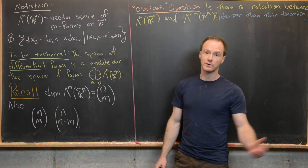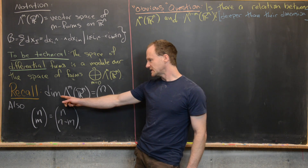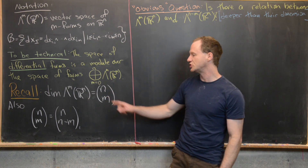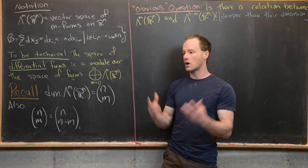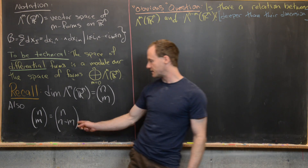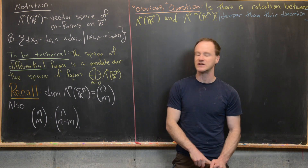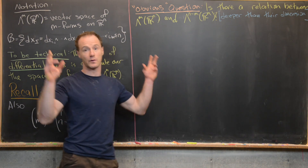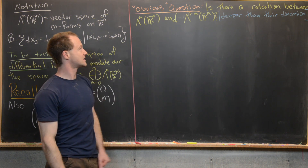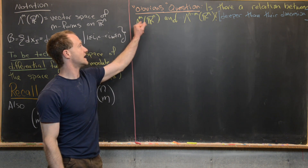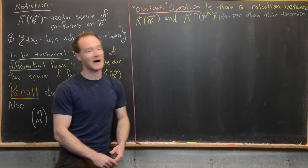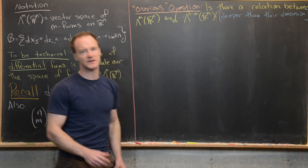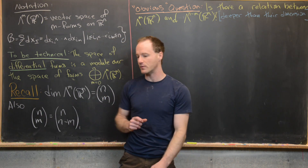We proved in a previous video that the dimension of the space of m-forms on R^N is the binomial coefficient N choose M. There are also binomial coefficient identities, including one that says N choose M is the same thing as N choose N minus M. Since those numbers are the same, that brings up the following obvious question: is there a relationship between the space of m-forms and the space of N minus M forms on R^N — a relationship deeper than just their dimension being the same?